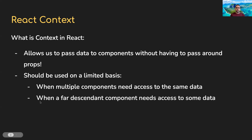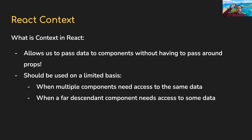Another common use case is when a far descendant component needs access to some data. Imagine a tree where the top level is the app component, with children under there, then grandchildren, great-grandchildren, and so on. If the app component has a state value that a many-times-removed grandchild needs, the common design is passing it as a prop all the way down — but those intermediate parents don't even need that data. Why pass props down through components that don't care about it?